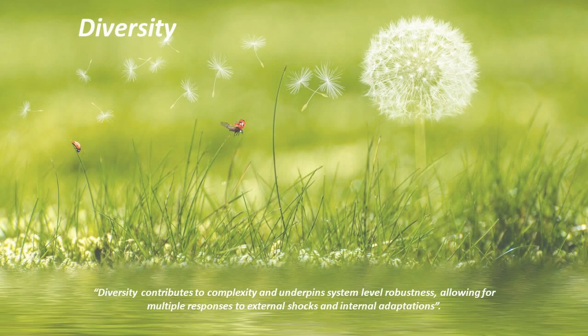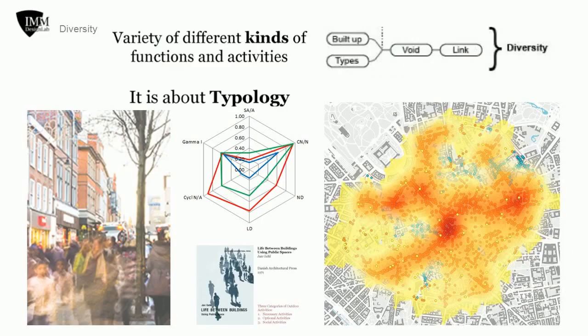Diversity contributes to complexity and underpins system-level robustness, allowing for multiple responses to external shocks and internal adaptations. In IMM, diversity emerges by the synergetic integration of type of uses, volumes, voids, and links. To investigate diversity, it is crucial to define the key functions. They are divided into: necessary and regular activities such as educational facilities or government facilities like childcare and hospitals; necessary occasional activities which the public prefers when needed but not regularly, such as some government facilities or banks; and optional activities which are not strictly restricted but a matter of choice, such as religious buildings, cafes, and restaurants.